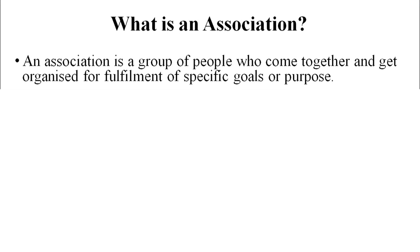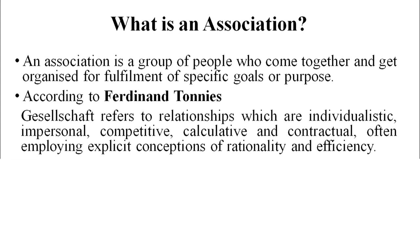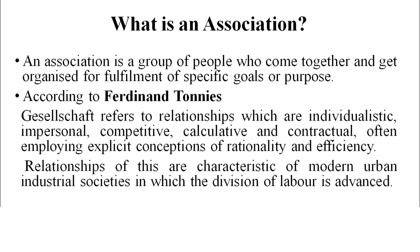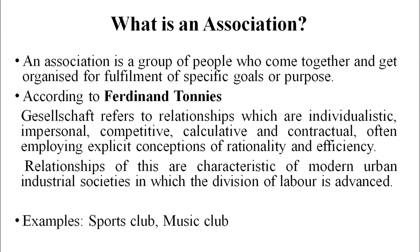After learning about society and community, let us understand what is an association. An association is a group of people who come together and get organized for the fulfillment of specific goals or purposes — it is deliberately formed. In an association, relationships may be individualistic, impersonal, competitive, calculative, and contractual. People build a relationship for a specific purpose; it may not be necessary that they share collective sentiments, but they are collectively organized for the pursuit of common collective goals. An example would be a sports club or a music club.